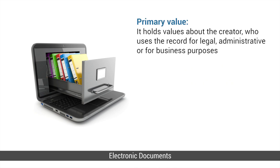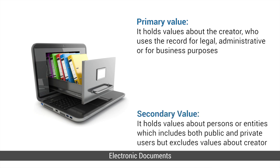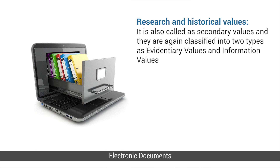Primary value holds values about the creator who uses the record for legal, administrative, or business purposes. The secondary value holds values about persons or entities that include both public and private users, but excludes the values about the creator. Research and historical values are also included under secondary values, but they are further classified into two types: evidentiary values and information values. This chapter focuses on the evidentiary values because they are very important to court proceedings as far as cyber crimes are concerned.